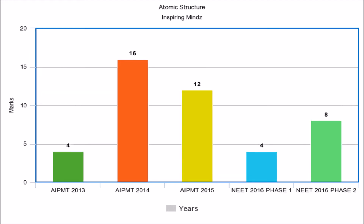For atomic structure, in AIPMD 2013 and NEET 2016 Phase 1, 4 marks of questions were asked. In AIPMD 2014, the weightage was highest at 16 marks, which reduced to 12 marks in AIPMD 2015. In NEET 2016 Phase 2, the weightage for this chapter was 8 marks.